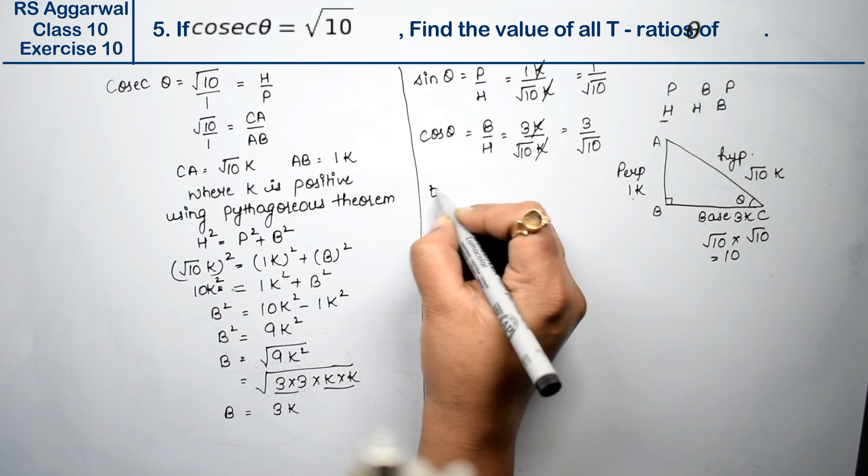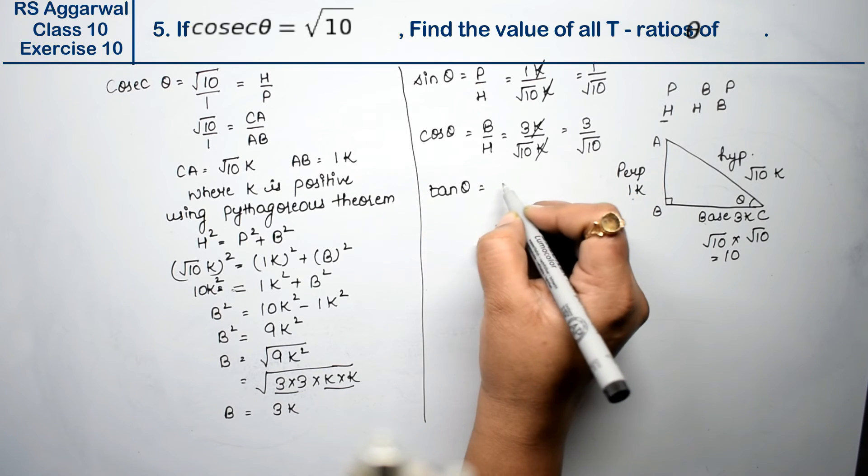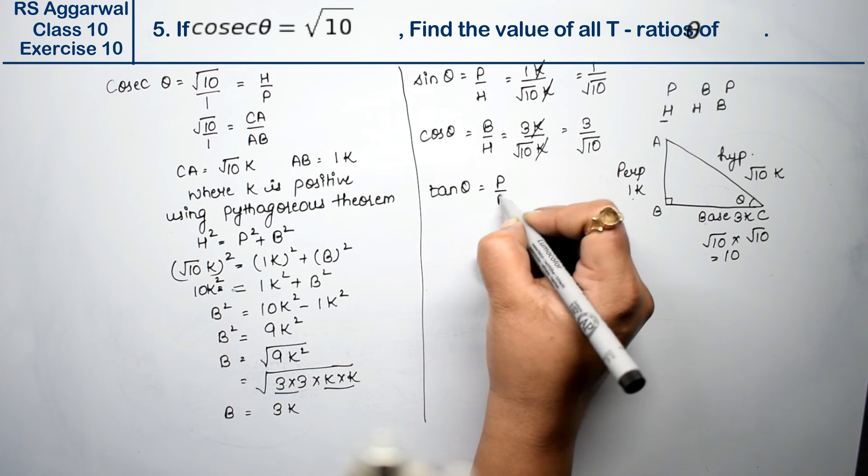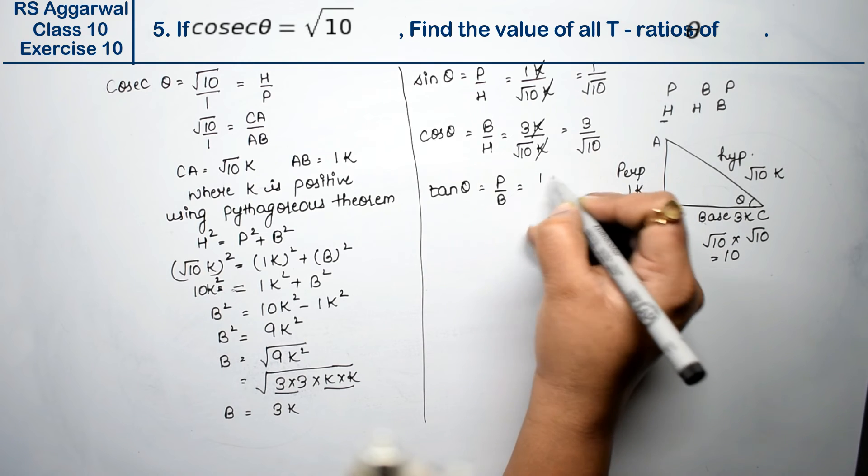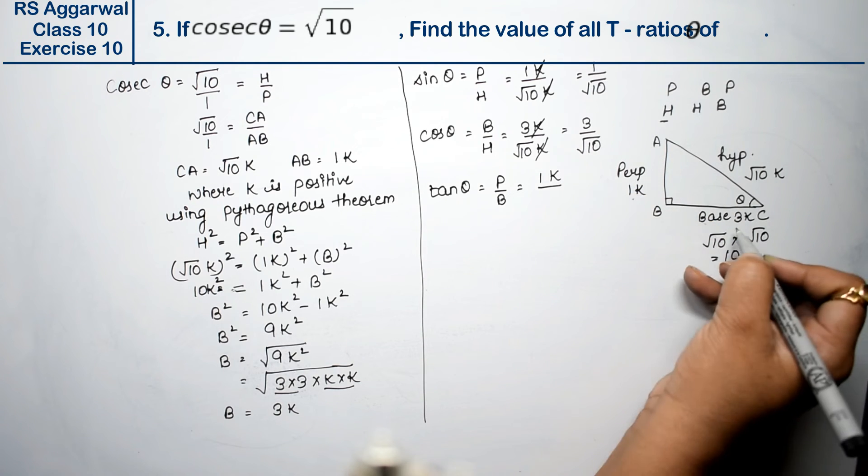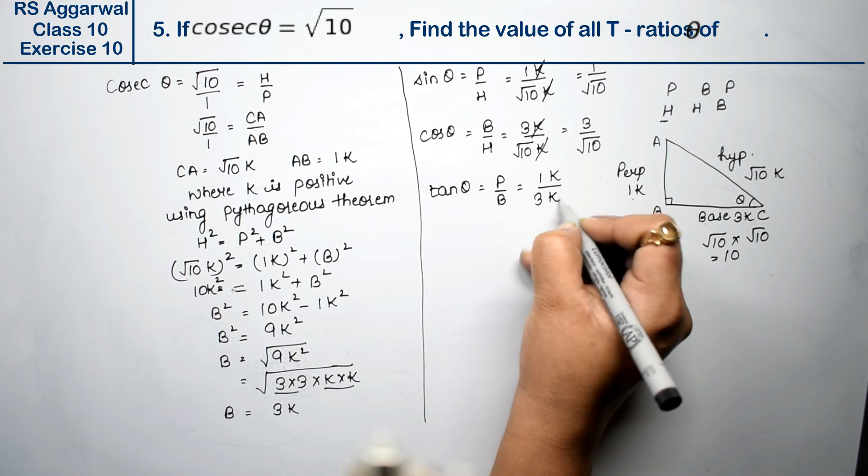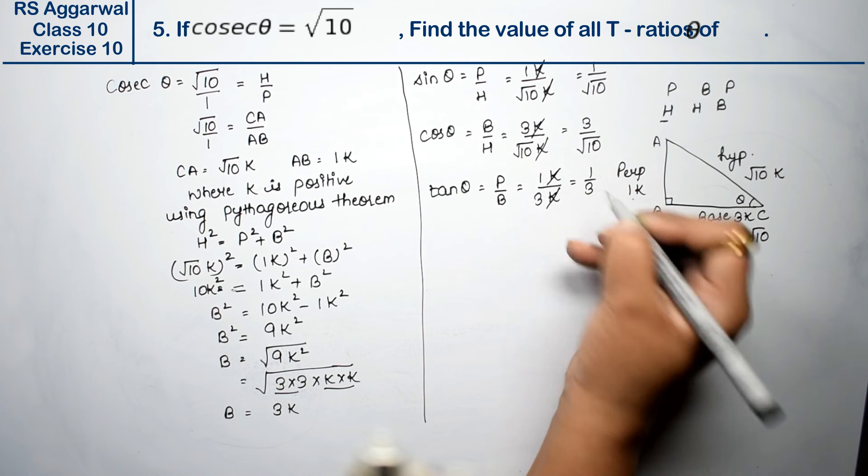Next is tan theta. Tan theta is P upon B. P is 1k and base is 3k. K and k cancel, so 1 upon 3.